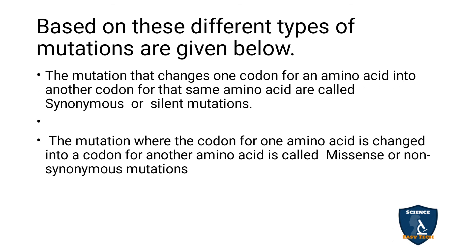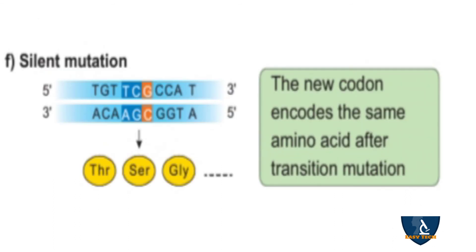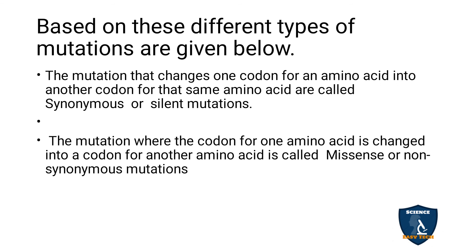Based on these different types of mutations: mutations that change the codon for one amino acid into another codon for the same amino acid are called synonymous or silent mutations. The codon is changed silently — for example coding for serine or glycine — and it is called silent mutation.